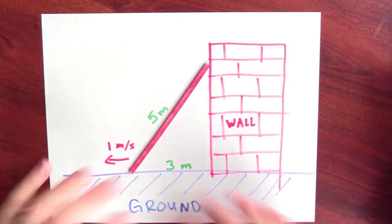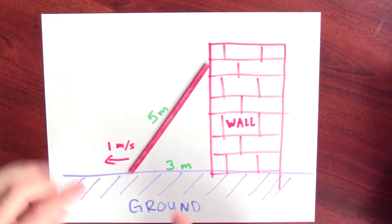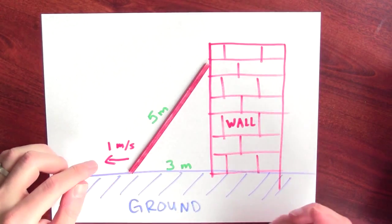A classic related rates problem involves a ladder leaning up against the side of a building. Well, here's the setup. I've got a wall and the ground. I've got a ladder resting on one side on the ground, the other side against the wall.